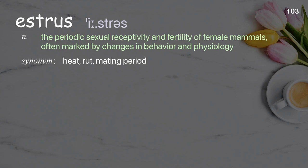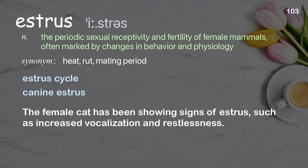Estrus: the periodic sexual receptivity and fertility of female mammals, often marked by changes in behavior and physiology. Examples: estrus cycle, canine estrus. The female cat has been showing signs of estrus, such as increased vocalization and restlessness.